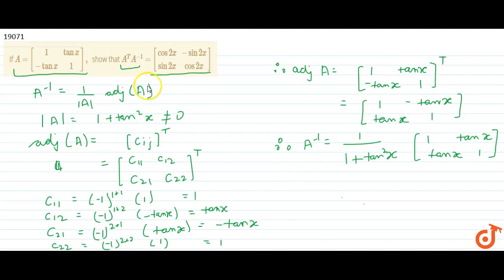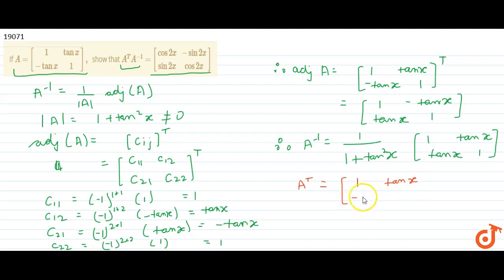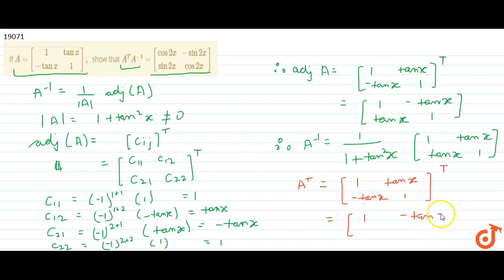Now we calculate A transpose. A transpose is the transpose of the matrix [1, tan x; -tan x, 1], and this is given by [1, -tan x; tan x, 1].